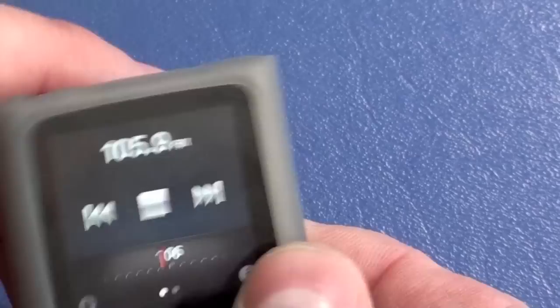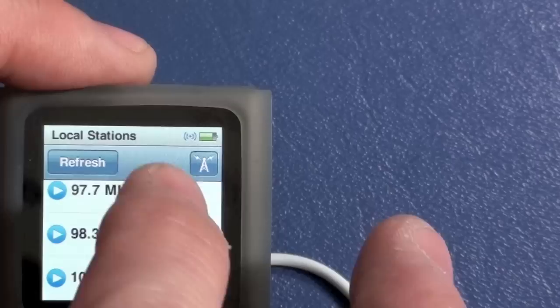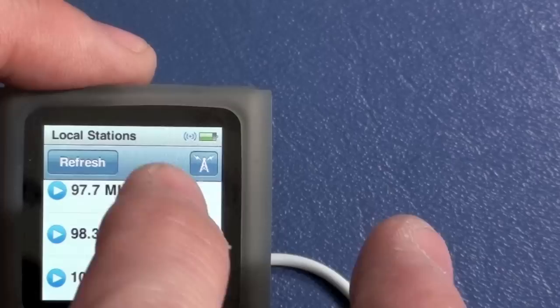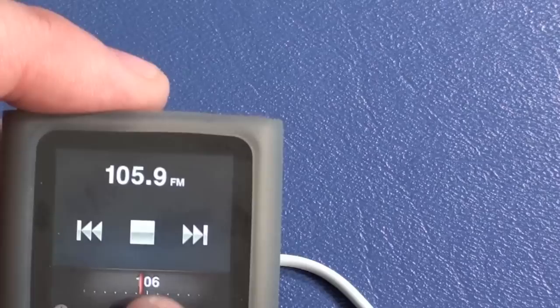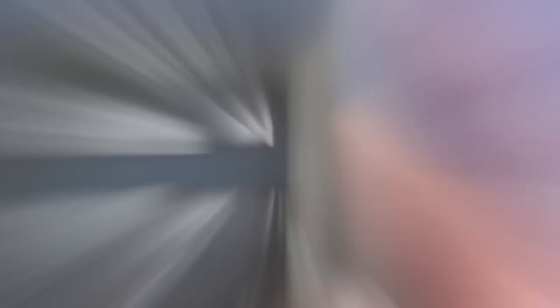I'll go ahead and hit Radio. And, you can tell it to, going down here, hit Local Stations and hit Refresh. You know, just go out there and find all your radio stations. And, then you could go ahead and select them. Or, you could just sort of manually swipe through the different things. Or, you could just sort of use the Find feature to go to each one.